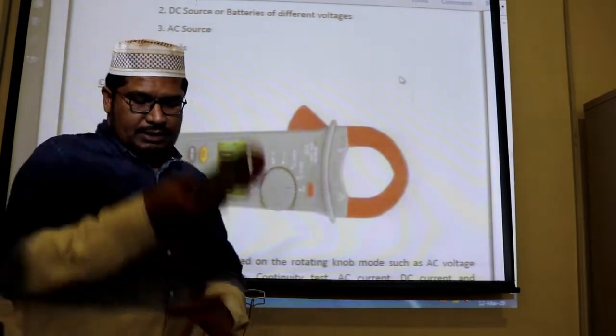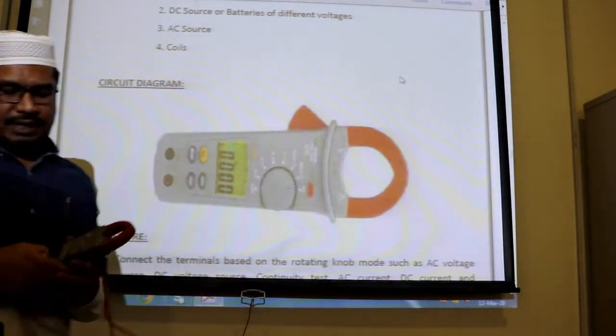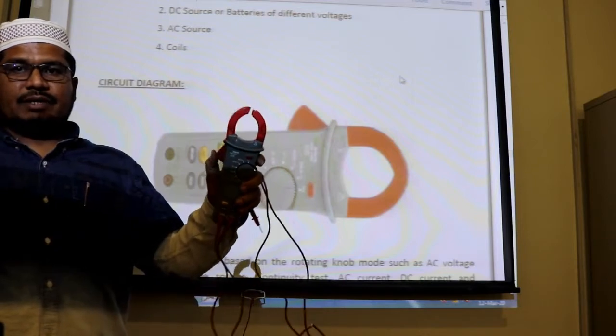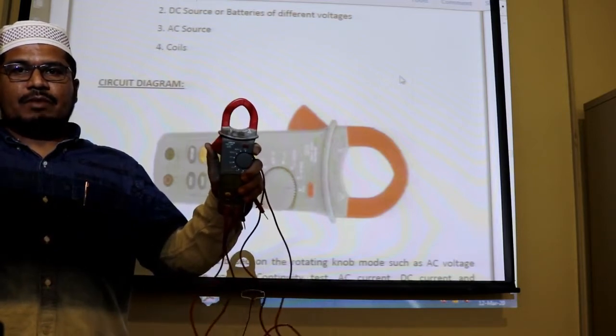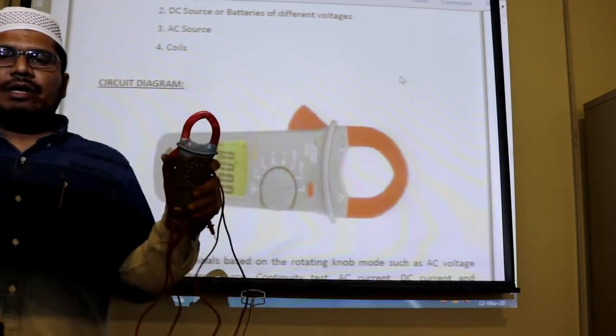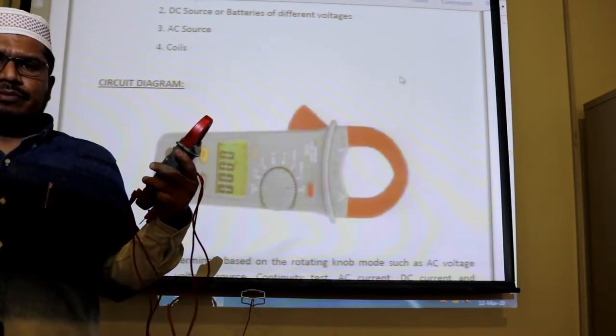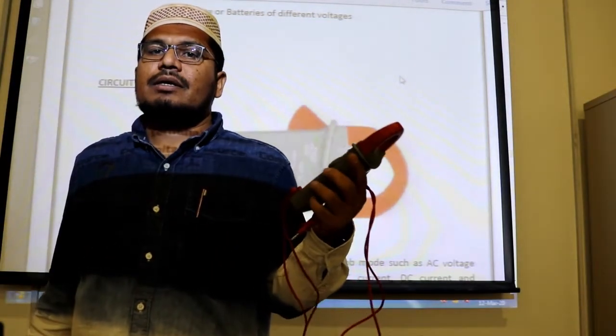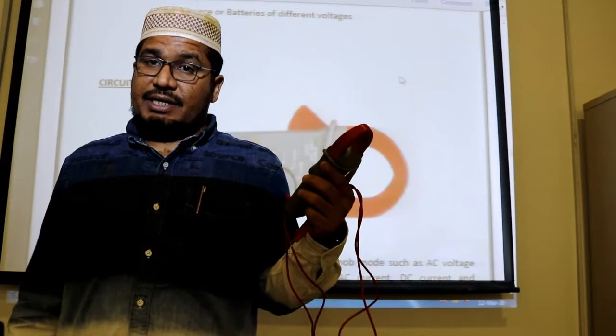Now in this multimeter clamp, there is a clamp here, see we can see here this clamp, clamp multimeter. So this is why the name came for clamp. So why we are using this clamp, because to measure the current in a particular wire, particular circuit.